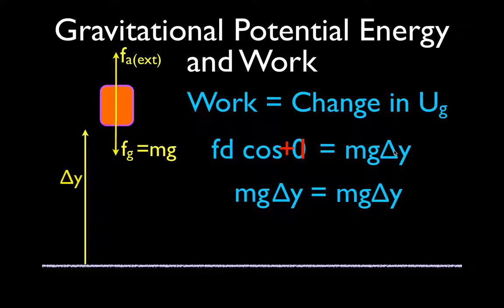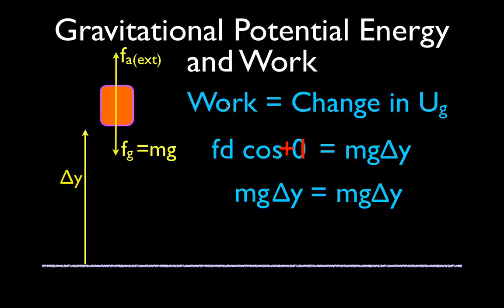And lo and behold, on the other side we already have mg delta y. So you can see that the work done by an external force is equal to the change in gravitational potential energy. When you do work on an object with an external force — raising it or lowering it — that work is equal to the change in gravitational potential energy. That is the relationship between gravitational potential energy and the work done by an external force.